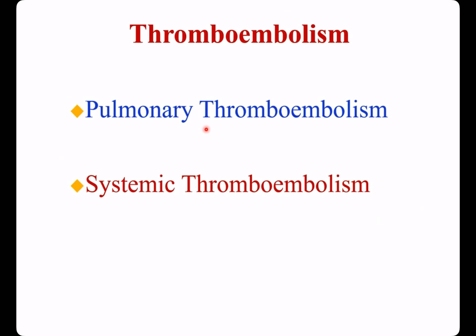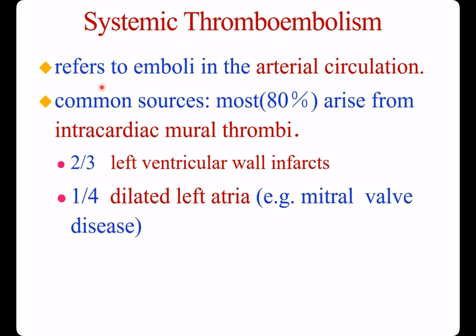Now let's learn systemic thromboembolism. Systemic thromboembolism refers to emboli in the arterial circulation. Most emboli — about 80% — arise from intracardiac mural thrombi.